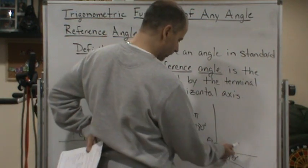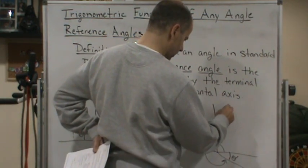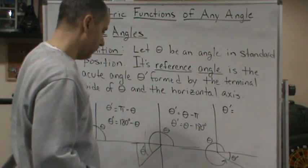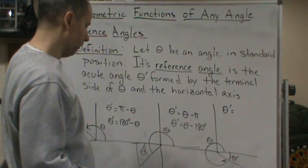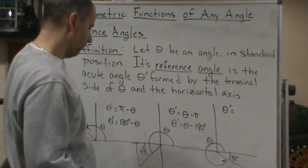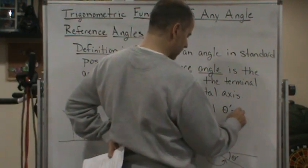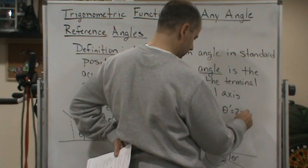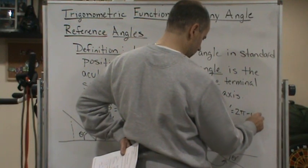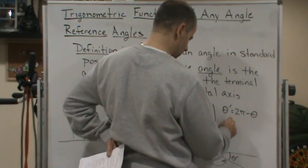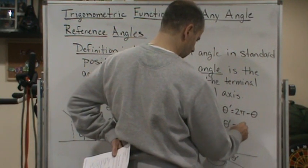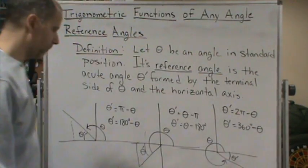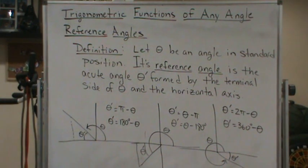In the fourth quadrant, to find θ', we could do 2π minus θ, or 360 degrees minus θ.